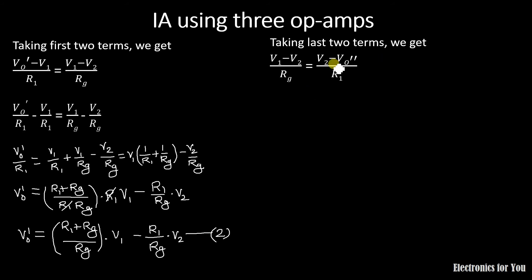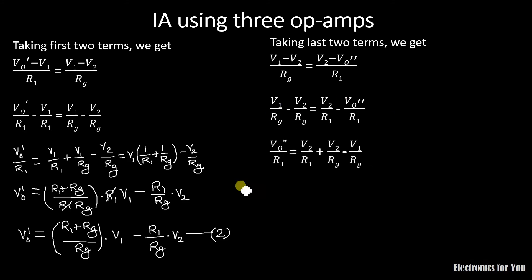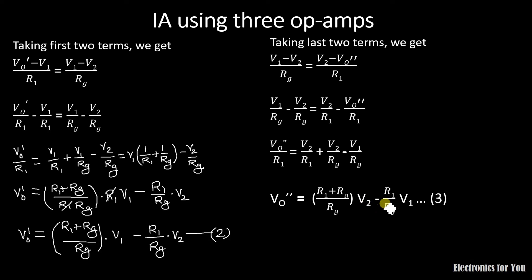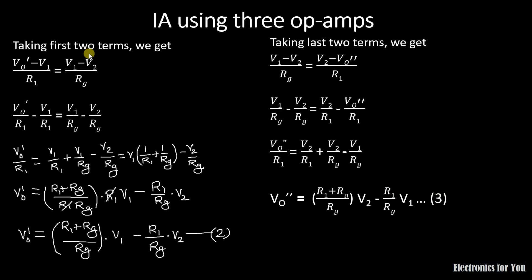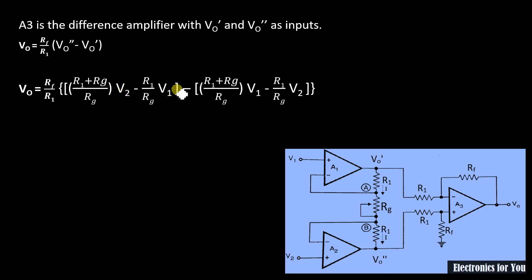To find Vo double dash, we use the last two terms: (V1 minus V2) upon RG equals (V2 minus Vo double dash) upon R1. Rearranging and simplifying similarly, Vo double dash equals (R1 plus RG) upon RG times V2 minus R1 upon RG times V1. Now, this is the output of a difference amplifier, so the formula for the final output Vo equals Rf upon R1 multiplied by (Vo double dash minus Vo').